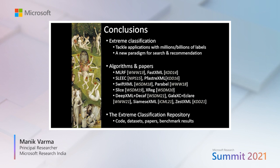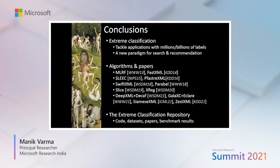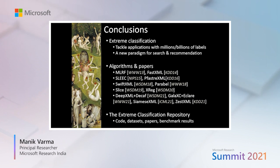To conclude, extreme classification is a new research area in machine learning which not only lets us tackle web-scale classification problems, but which has also opened a new paradigm for key applications in search and recommendation. Microsoft has developed a number of algorithms published at premier venues, whose source code is available on the extreme classification repository which my group maintains. If you are new to the area and looking to learn more, the repository might be a good place to start, as it contains code from many groups around the world, as well as datasets, metrics, and benchmark results which make it very easy to carry out open reproducible academic research. Please check out the repository, and if you would like to contribute an algorithm or a dataset or collaborate with us, do let me know. Thank you very much.